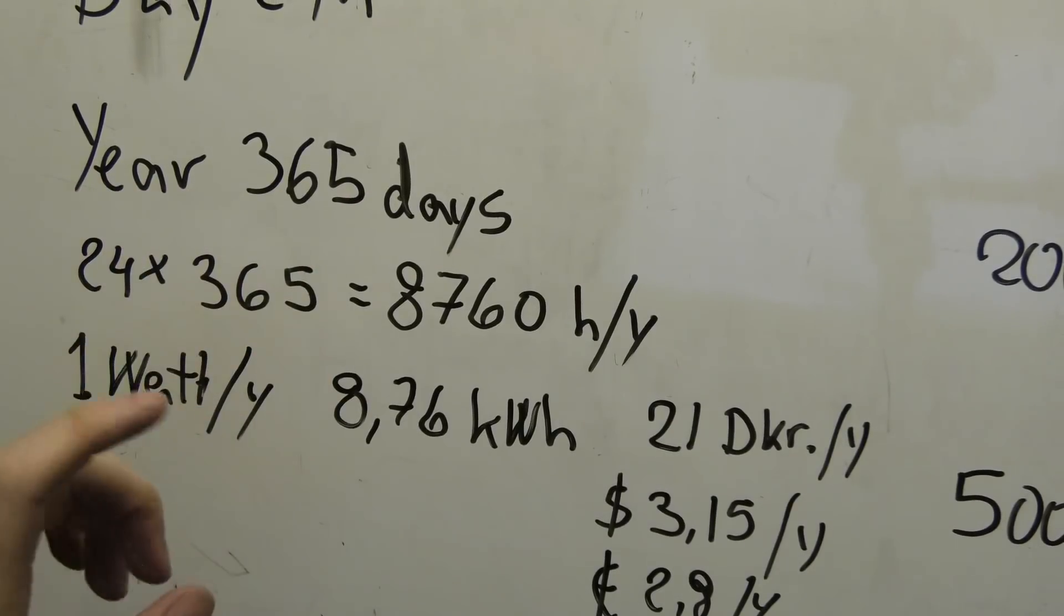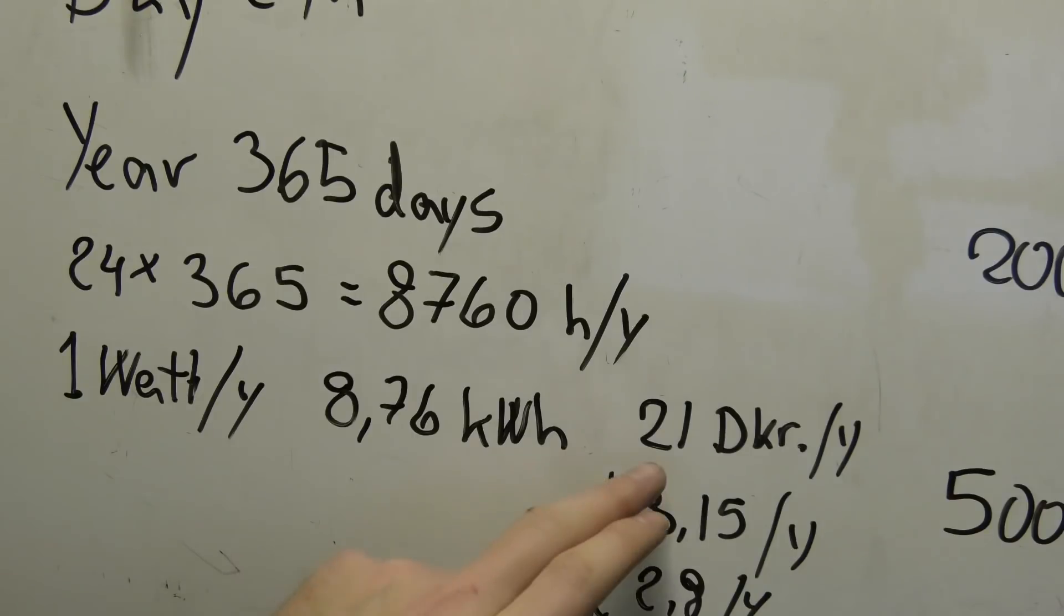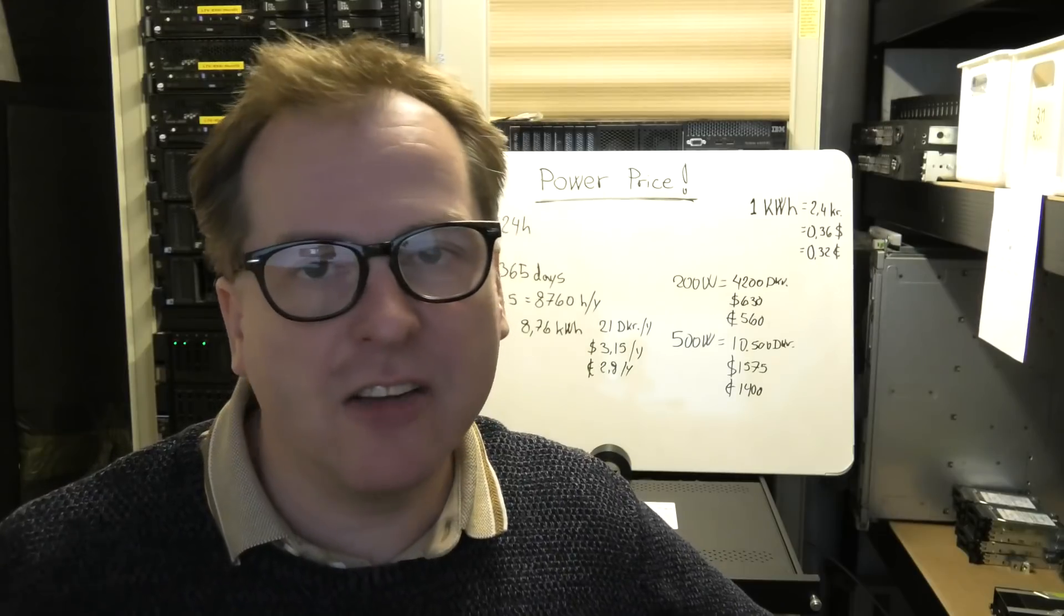This calculation over here, how much do you pay for one watt in a year, is very good to have. So every time I see something, I know that one watt costs about 21 Danish kroner a year. So if it uses 10 watts, it's very quickly to calculate that, okay, then it's 210 Danish kroner in a year. If it uses 100 watts, well, 2,100. Yeah, that's a great calculation to have in your head.